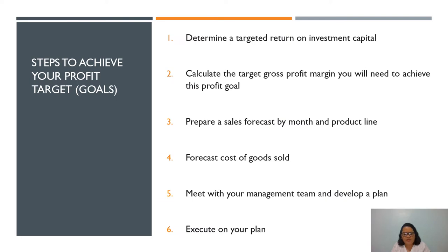Number four, forecast cost of goods sold — target sales less your target gross profit will determine the forecast cost of goods sold. Compare this target to previous years and make adjustments. You may find that you have to make productivity improvements and determine whether additional investments are needed to realize those improvements. Number five, meet with your management team and develop a plan — here's where you and your team agree on specific actions to boost sales, improve labor productivity, and tighten supply and expense management. It helps to make specific people responsible for delivering results in their areas.